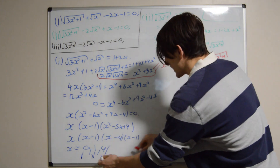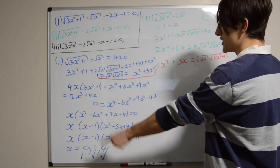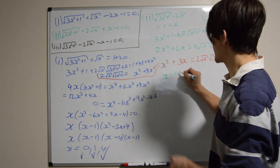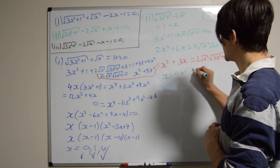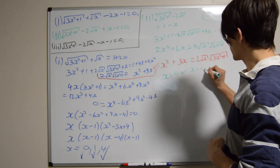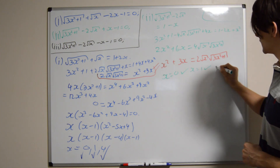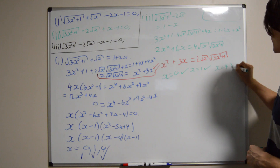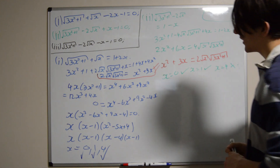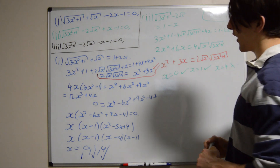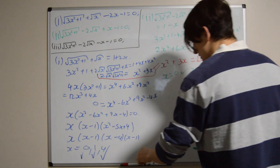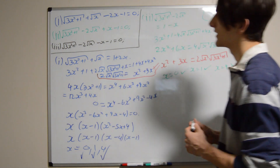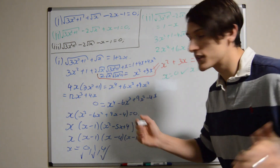So it's just a case of checking these solutions with our second equation. If you check x equals 0, you see that works with part ii. If you check x equals 1, that works too. And if you check x equals 4, you'll see that in fact doesn't work. This has been amazing — a very fruitful technique. Let's try it with the third part.